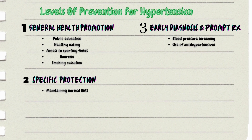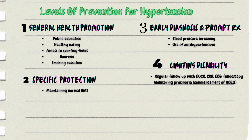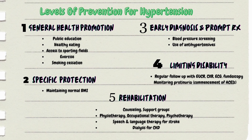For level three, early diagnosis and prompt treatment of hypertension, include early commencement of blood pressure screening and use of antihypertensives. For level four, limiting disability, anticipate complications of hypertension which include stroke and heart disease — using regular EUCR, chest X-ray, ECG, regular fundoscopy, and monitoring for proteinuria with commencement of ACE inhibitors if present. For level five, rehabilitation, include counseling, social support groups, physiotherapy, speech and language therapy for stroke, occupational therapy, and dialysis for chronic kidney disease.